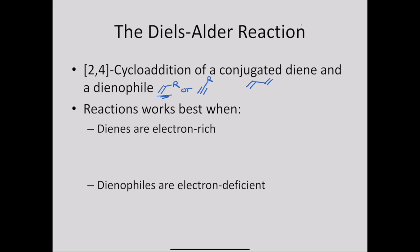The Diels-Alder reaction works best if two different criteria are met. The first criteria is that these reactions work very well when the dienes are electron-rich.